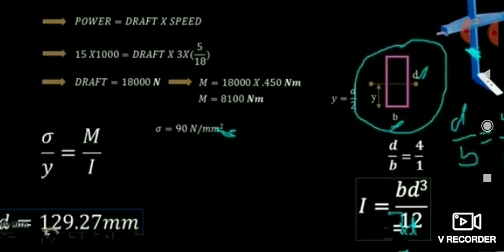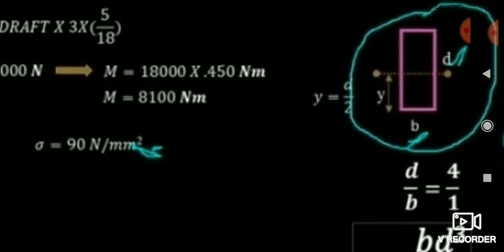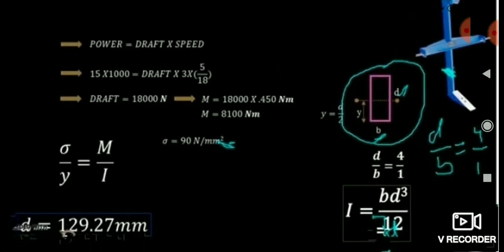Calculate I = BD³/12, replacing B with D/4. Then apply σ/y = M/I with y = D/2. Substituting all values — σ = 90 N/mm², M = 8,100 Nm — and solving for D gives the width = 129.27 mm. You should do this calculation yourself using the GATE calculator, not your scientific calculator, to improve efficiency in the final examination.